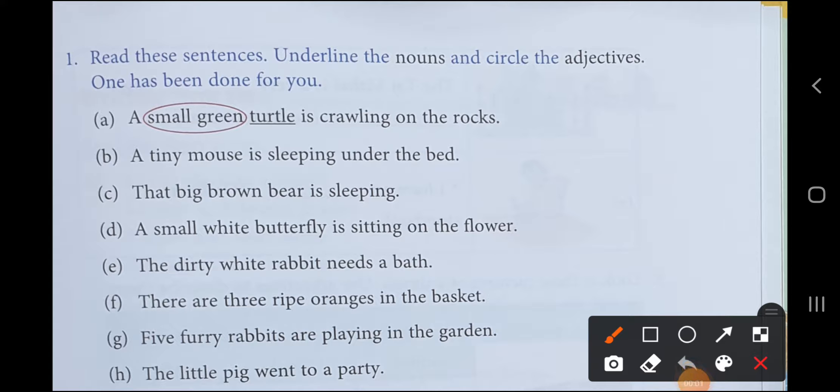Hello everyone, we are going to do a book exercise of adjectives. Open book page 153. In this, what we have to do is underline the nouns and circle the adjectives. We know what are nouns, we know what are adjectives, so we will find out the noun and underline it, and we will circle the adjectives.